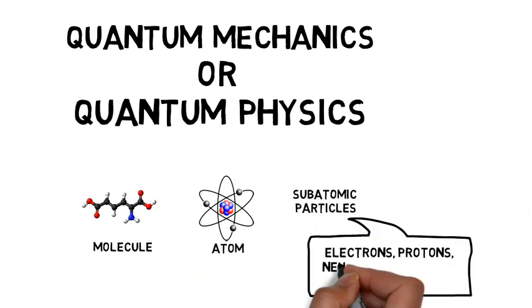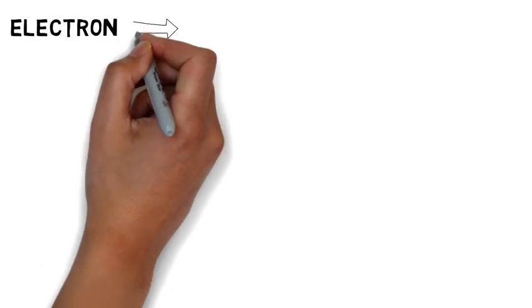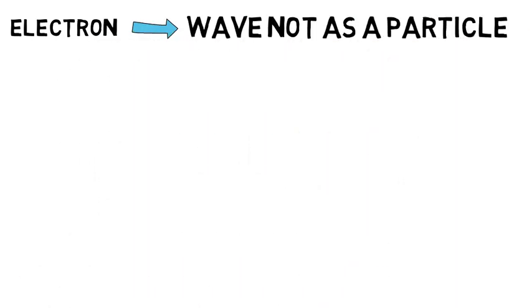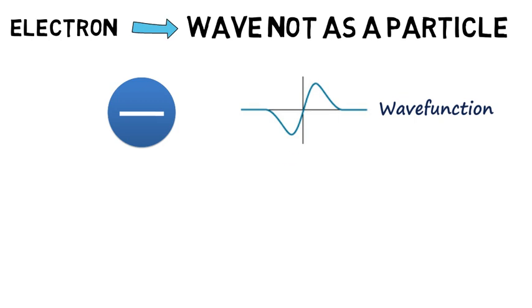Let us take the electron as an example. In quantum physics we describe the electron as a wave, not as a particle. So the electron can't be pictured like this. Instead it should be like this, and we call this a wave function. But this is not a real physical wave like a sound wave.